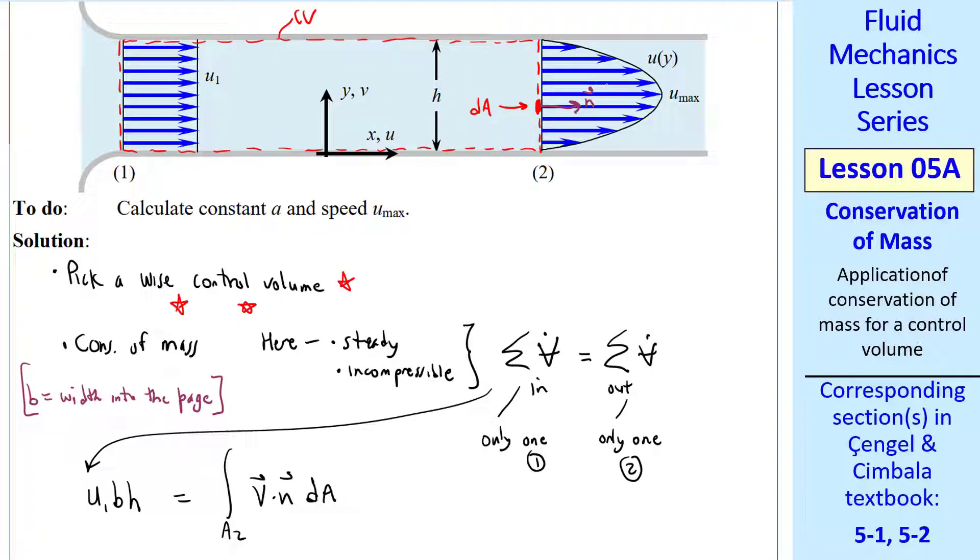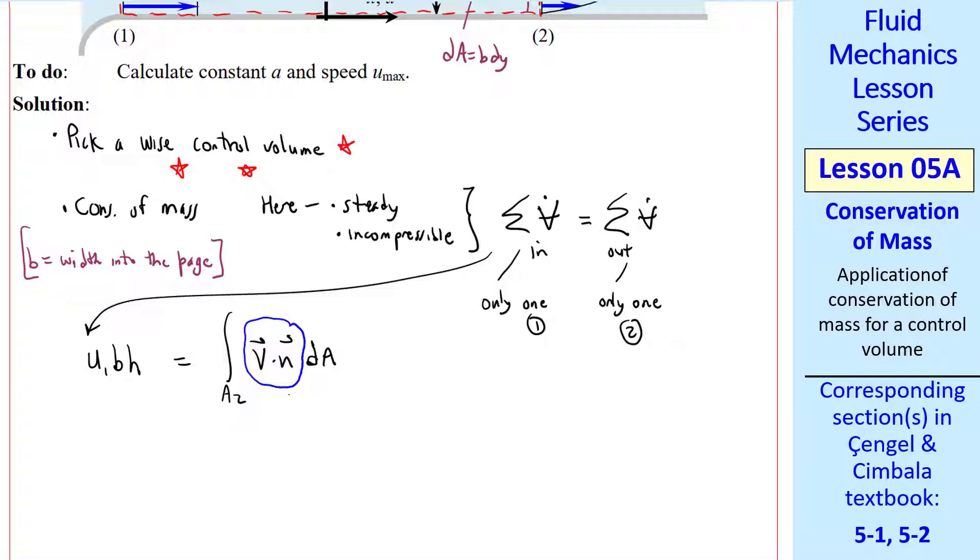So the right-hand side becomes integral over A2 V dot N times dA, where dA is some little section of this outlet area. It has a unit outward normal, and it has a local V vector, which varies with Y. This little distance is dy, so dA is equal to B dy at any Y location from the bottom wall. We have to evaluate V dot N. The velocity vector is U2, 0, 0.